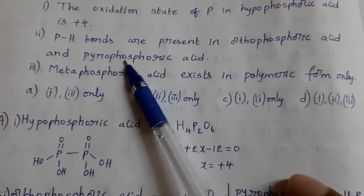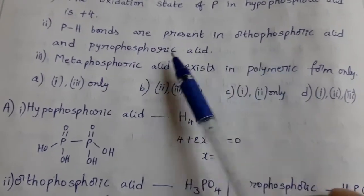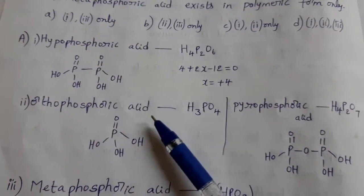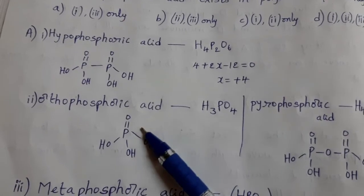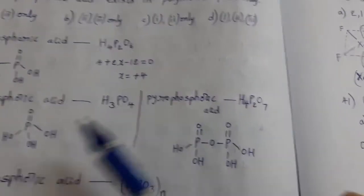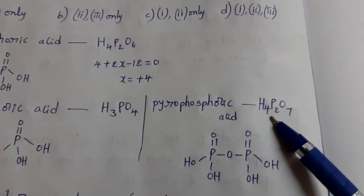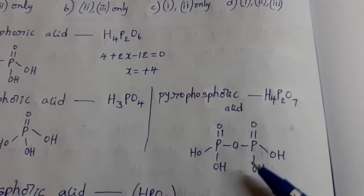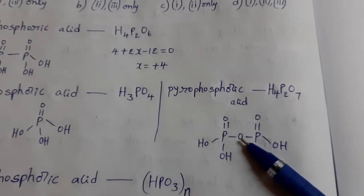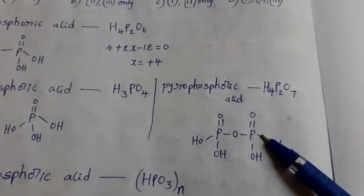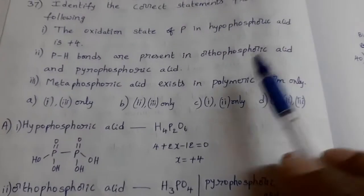Next, orthophosphoric acid, pyrophosphoric acid having P-H bonds. From their structures we can get the answer for this. Orthophosphoric acid H3PO4, this is the structure. Three OH groups, one double bond oxygen. So here no P-H bonds. And pyrophosphoric acid, formula H4P2O7, this is the structure. Here four OH groups, two double bond O groups, and one P-O-P bond. In this also there is no P-H bond. Second statement is wrong.